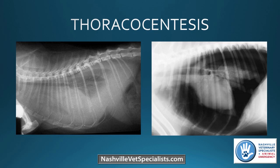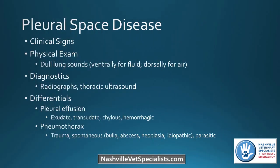Thoracocentesis is a pretty common procedure that we do in the ER. These radiographs show pleural effusion and a pneumothorax, respectively. Both would be indications to perform a thoracocentesis if you see these on x-ray. We're really looking at pleural space disease. Clinical signs would be things like dull lung sounds ventrally for pleural effusion, or dorsally for a pneumothorax. Usually the patients are also tachypneic or dyspneic. On diagnostics, we can see radiographs, and you can also use thoracic ultrasound to see pleural fluid.